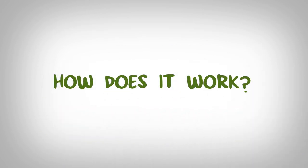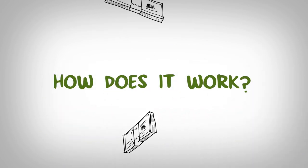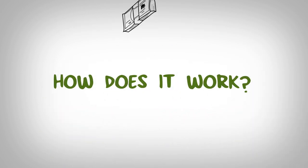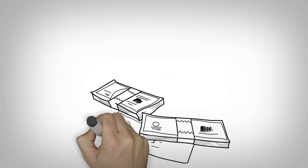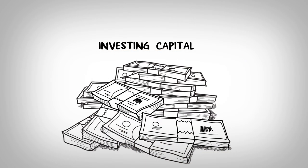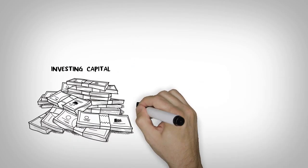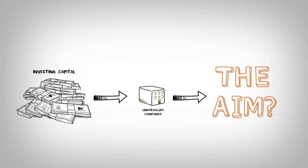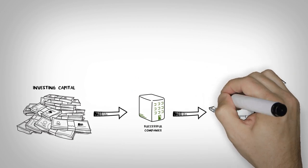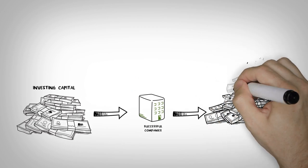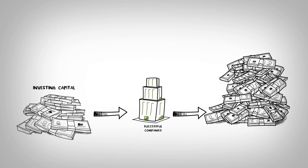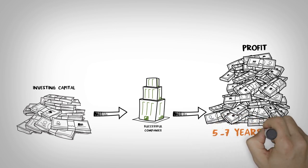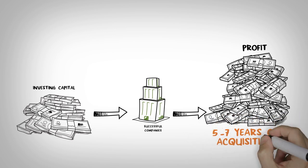How does it work? In general, a private equity firm uses some of its own capital and capital raised from investors to invest in undervalued companies. The aim is to improve the value of those companies and then take them public or sell them for a profit. This usually happens within five to seven years of the acquisition.